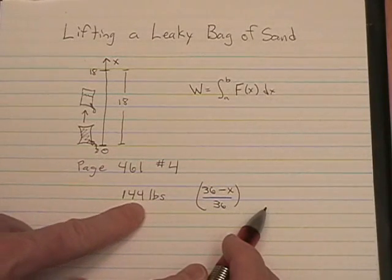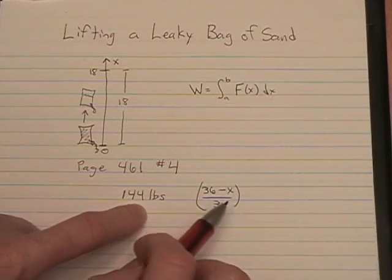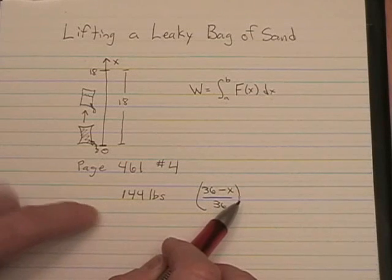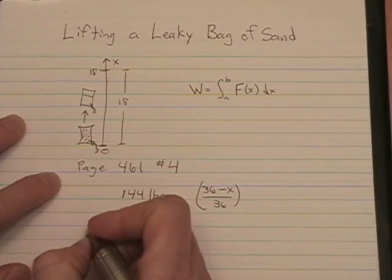Since it started out at 144, if we multiply these together, that tells us the weight or force at any distance x. And that's how we're going to set up our f of x. So here's what it looks like.